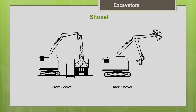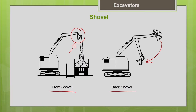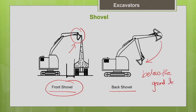Shovels can be divided into two types based on the digging motion of the bucket. In the French shovel, the bucket moves in an upward direction, away from the machine. In the backhoe or back shovel, the digging motion is downward, towards the machine. When you want to dig at or above the ground level, use the French shovel. For deeper excavation below the ground level, use the backhoe.